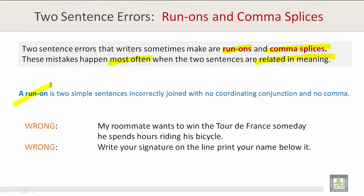A run-on is two simple sentences incorrectly joined with no coordinating conjunction and no comma. For example: 'My roommate wants to win the Tour de France someday he spends hours riding on his bicycle.' There's something missing here.